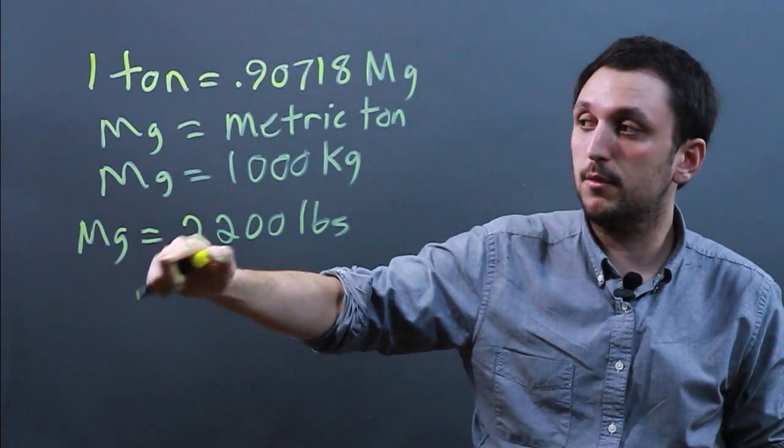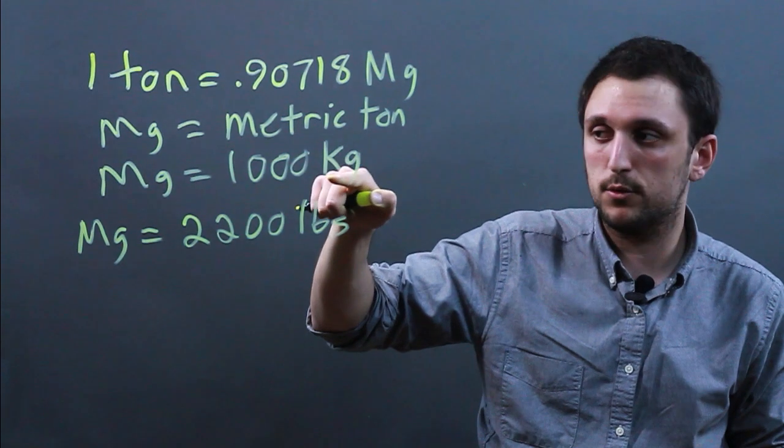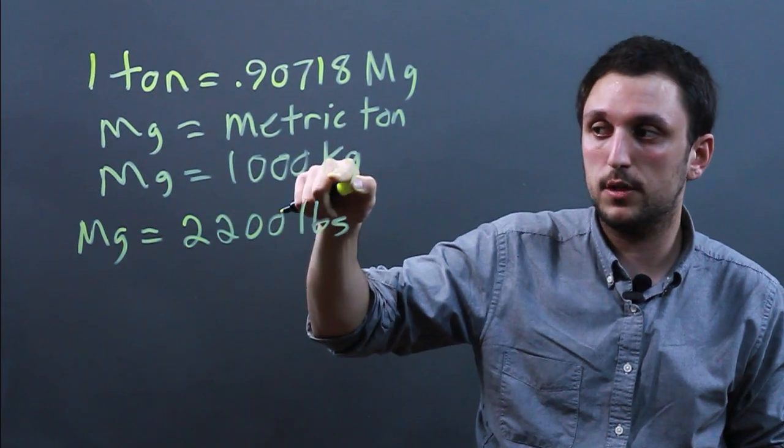So megagram is a million grams or a thousand kilograms which is a thousand, so 1,000 times 1,000.